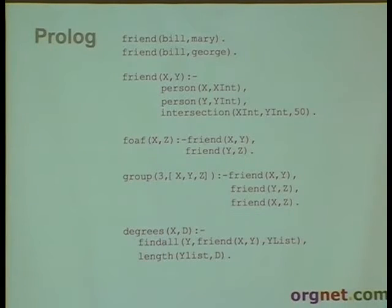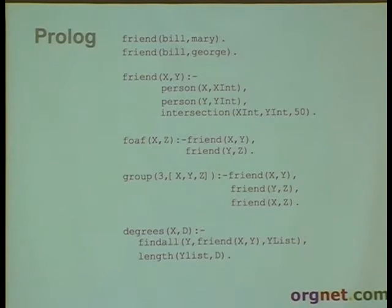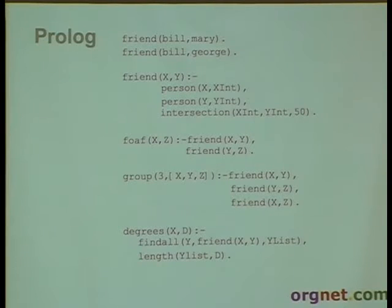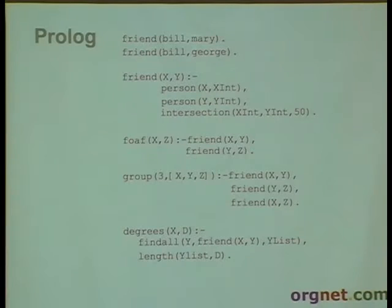We can find groups very easily: if X and Y know each other, Y and Z know each other, and X and Z know each other, that's the basis of a group. Social network analysis has metrics, and one of the simplest is called degrees — just how many connections you have. Two lines of code: find all your friends, put them in a list, see how long the list is, and there's your degree metric. This is basically how I started almost 20 years ago. I had to do a project for classes at UCLA, one thing led to another, and eventually I quit my day job to do this type of analysis full time.